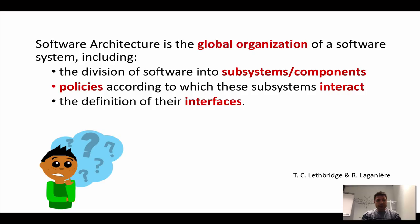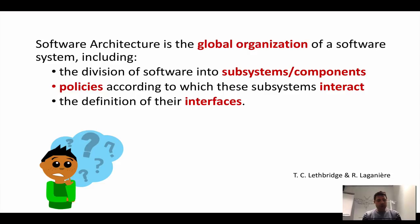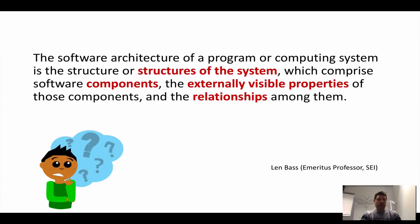These concepts are fundamental if you want to become a strong software architect. If you see definitions of software architecture, for example: software architecture is the global organization of the software, including the way it is divided into subsystems, the policy according to which those systems interact, and how the interfaces are defined. This is what software architecture is about — how your software is divided into different modules and how those modules interact with each other.